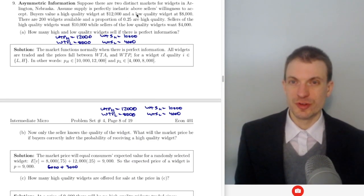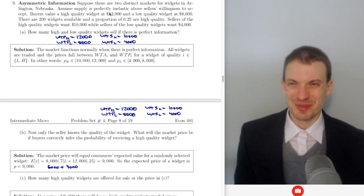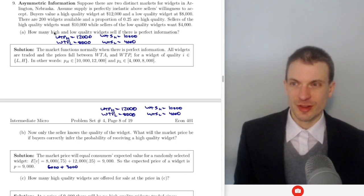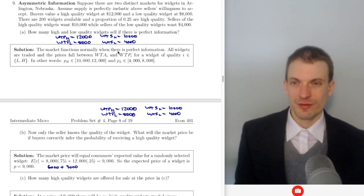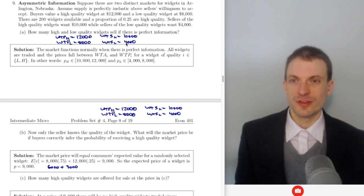Another asymmetric information question. Suppose there are two distinct markets for widgets in Arlington, Nebraska. Buyers value a high quality widget at $1,200 and low quality at $8,000. 200 widgets are available; a quarter of them are high quality. Sellers of high quality want $10,000; sellers of low quality want $4,000. With perfect information, all 200 widgets trade: the price for high quality is somewhere between $1,200 and $10,000, and for low quality between $8,000 and $4,000.